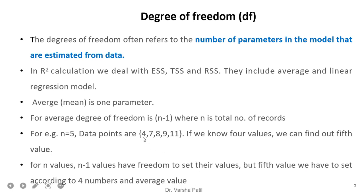So here, if we know the average of the numbers 4, 7, 8, 9, 11, then we can set any 4 values freely, but whatever the last number is, we have to set it according to the 4 numbers and the average. That's why the degree of freedom is n-1 — out of 5 variables, 4 variables have freedom, so degree of freedom is 4.